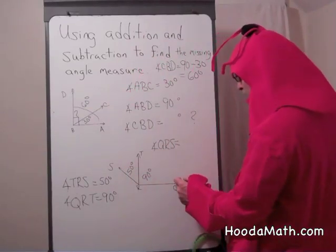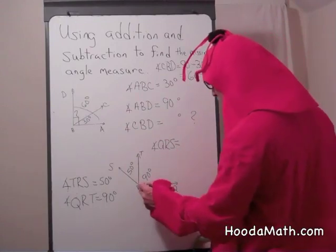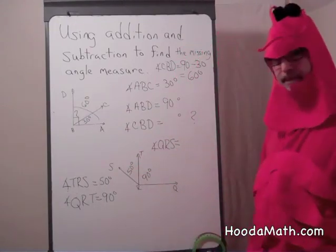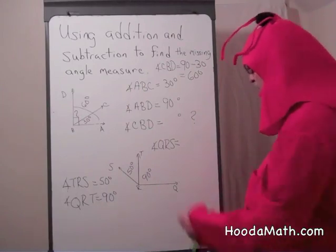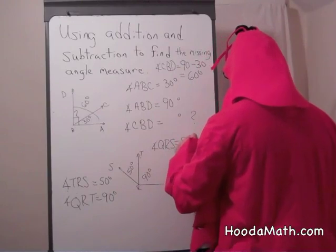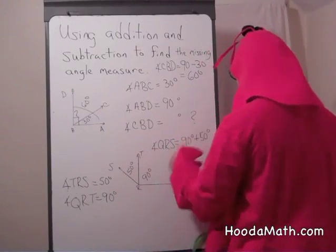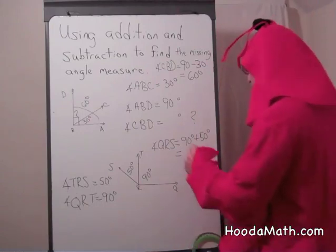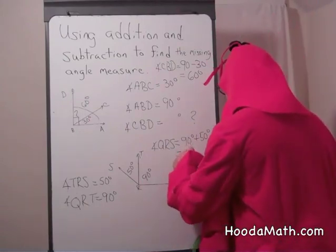What would be the measure of angle QRS? That's right. It would be the sum of these two angles, 90 plus 50, and that would give you 140 degrees.